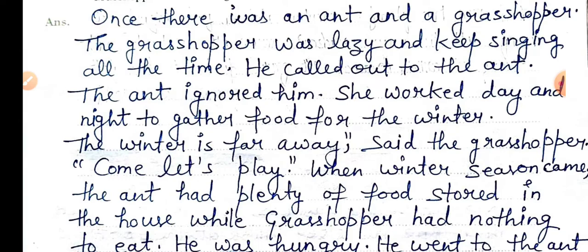Once there was an ant and a grasshopper. The grasshopper was lazy and kept singing all the time. He called out to the ant, but the ant ignored him — she worked day and night to gather food for the winter season. The grasshopper said the winter is far away, so he wanted to play.